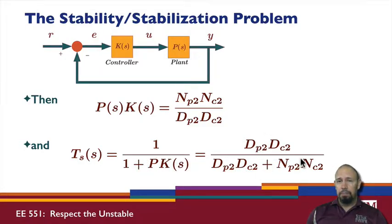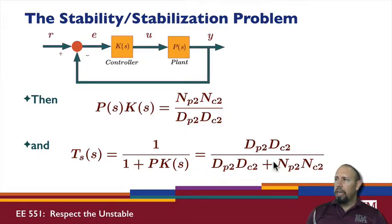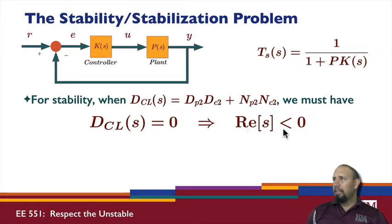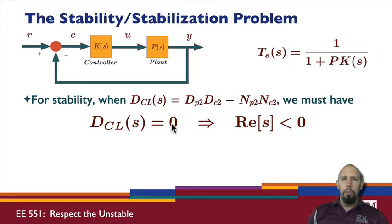This is the basic stabilization problem. Notice that this transfer function's denominator can have no roots in the open right half plane. We have stability when this closed-loop transfer function denominator has zeros only in the left half plane. DCL(s) = 0 implies that the real part of s is strictly negative — meaning all closed-loop poles are in the open left half plane. That's what we require for stability.